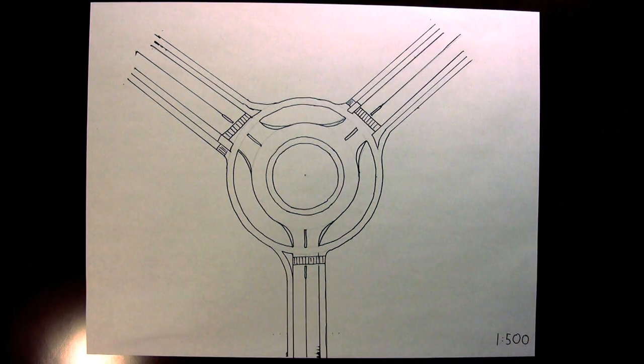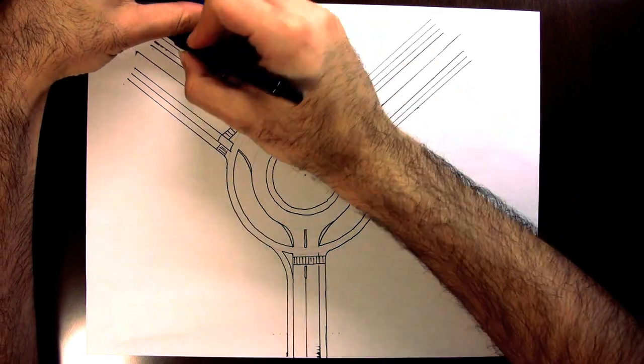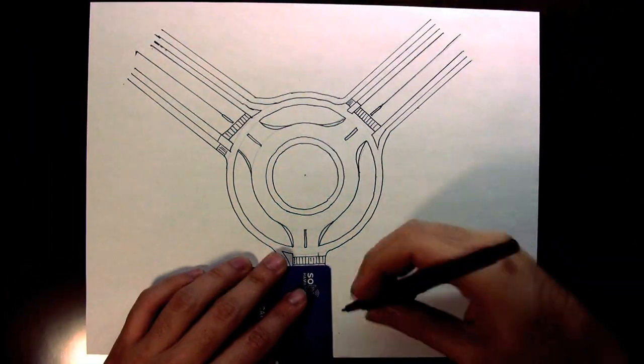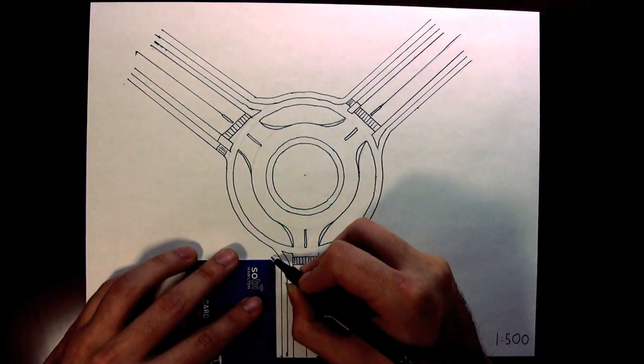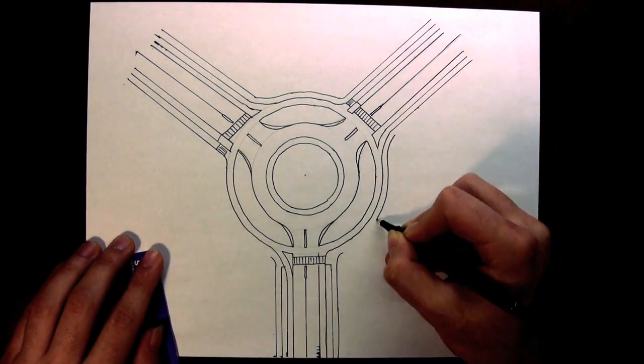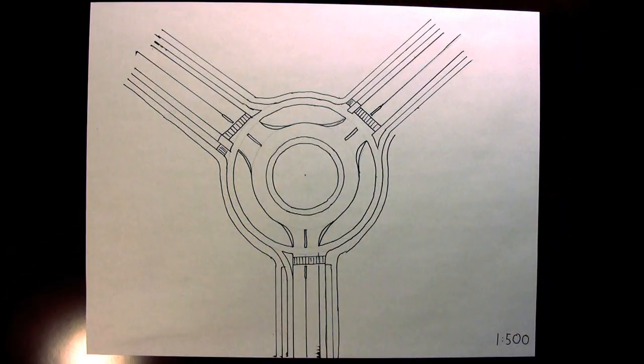With the form of the roundabout complete, I can add in the sidewalks. I'm going to put them directly against the bicycle path on the streets with cycle tracks and set back with a boulevard on the street with on-street bike lanes.